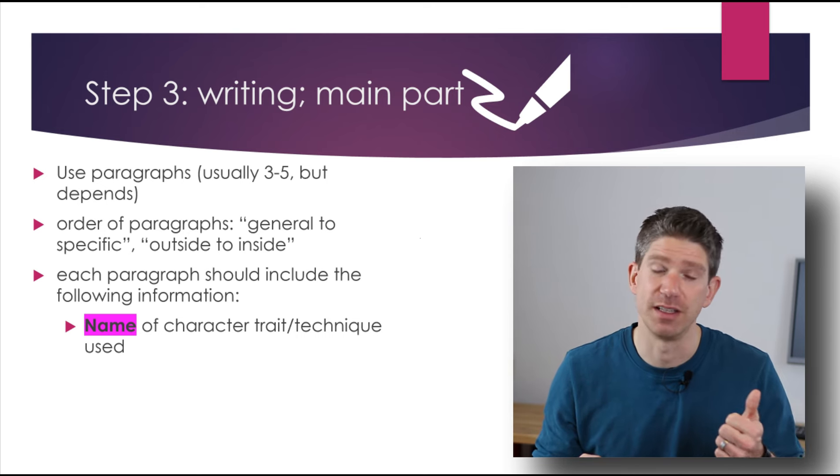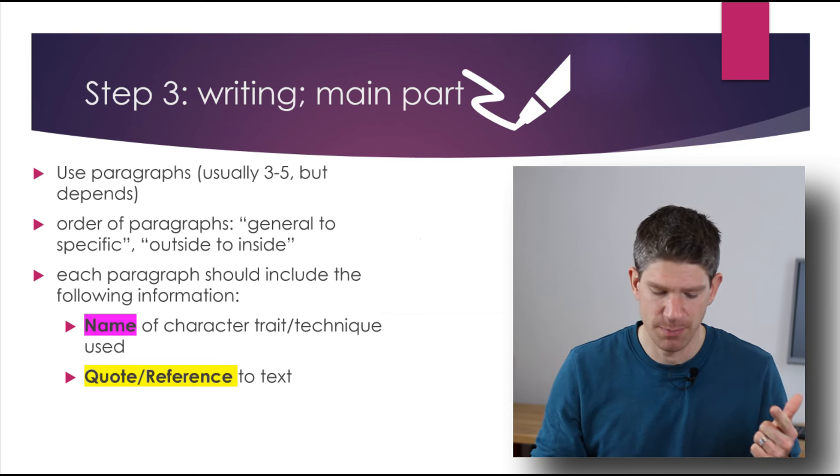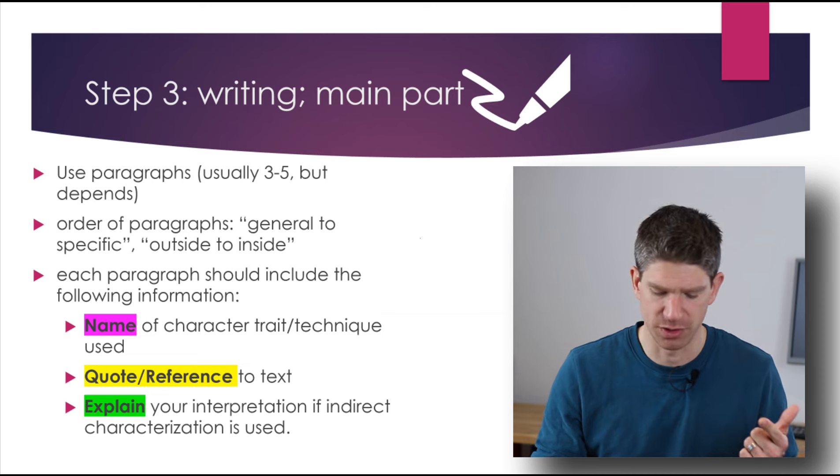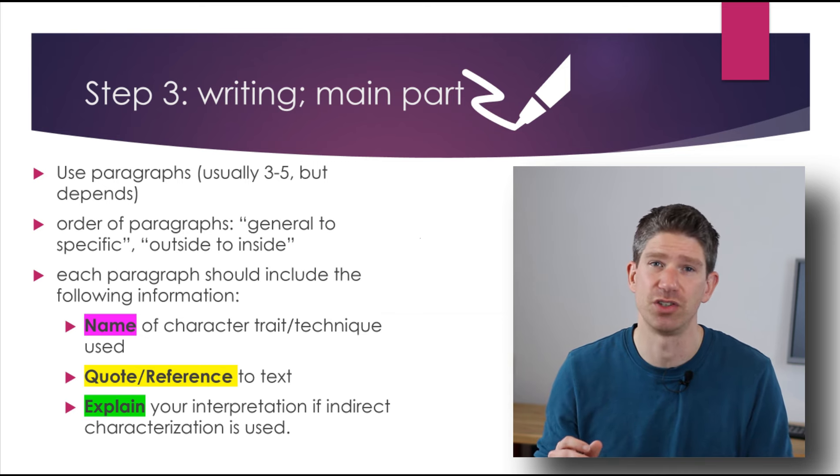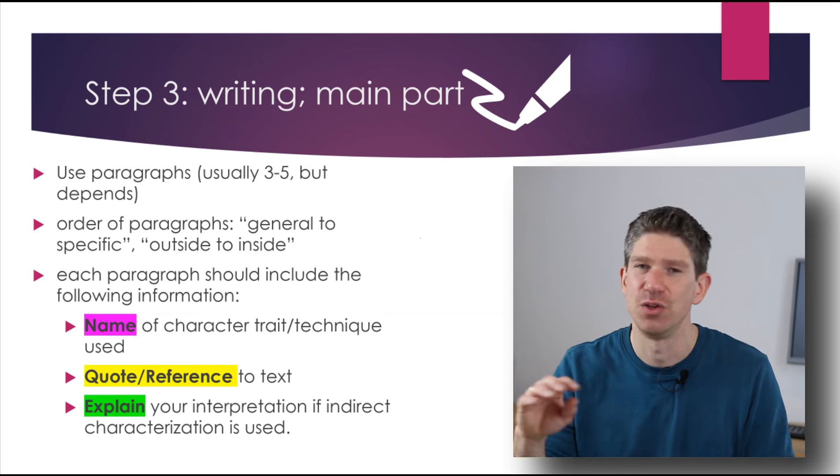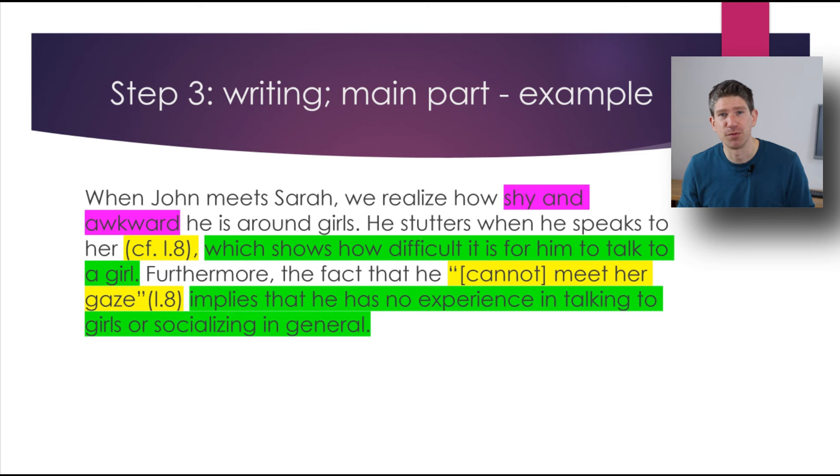And each of these paragraphs should have the following information. You would name the character traits. So John is aggressive or John is funny or whatever. And then you should have a reference to the text to give proof for what you've just said. And you should explain how you arrive at this conclusion because of some actions. And you really need this if it's indirect characterization. So if from what somebody did or does in the text, you can come to a conclusion about what this person is like. Let me give you an example for a paragraph like this. When John meets Sarah, we realize how shy and awkward he is around girls. He stutters when he speaks to her. Confer line eight, which shows how difficult it is for him to talk to a girl. Furthermore, the fact that he cannot meet her gaze implies that he has no experience in talking to girls or socializing in general. You see I marked in the colors here purple is the main finding, the adjectives you have inferred about this character. The quotes and references are in yellow and the explanation of the quotes and your findings, the connection between them is in green.